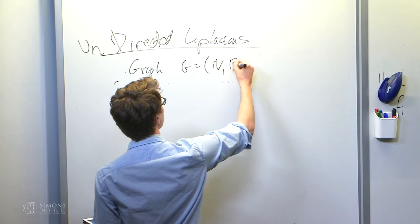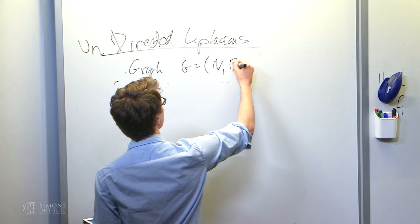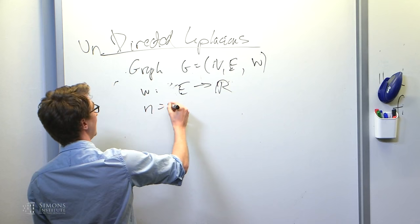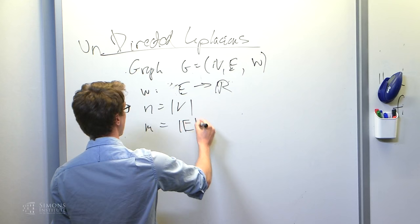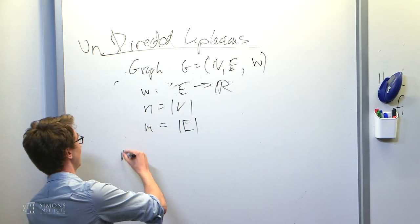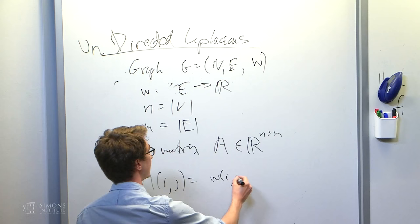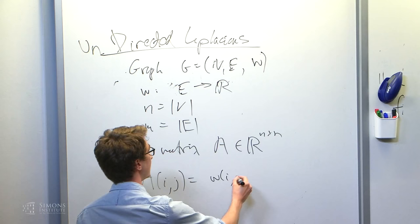So they're defined in terms of a graph G, undirected graph with vertices V, edges E, and edge weights W. W assigns a positive weight to every edge. Let's say that there are n vertices, m edges. Okay, and then let's define the adjacency matrix of the graph. I think you all know what it looks like, but let me say it anyway. So the adjacency matrix A lives in R^n by n. And it's given by the A_ij entry is just the weight on edge ij, or zero if no edge.